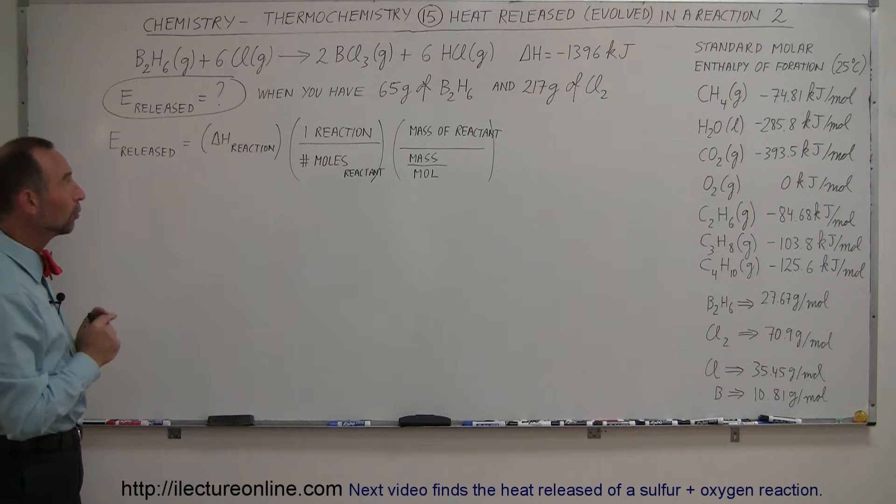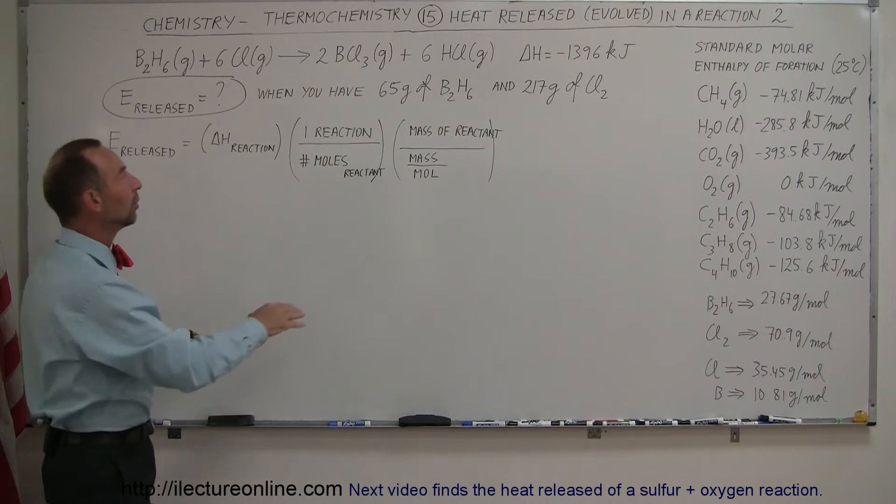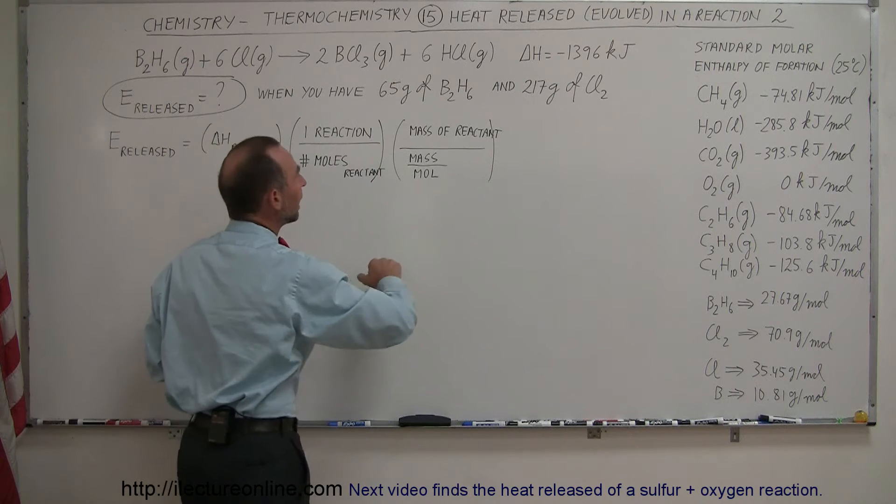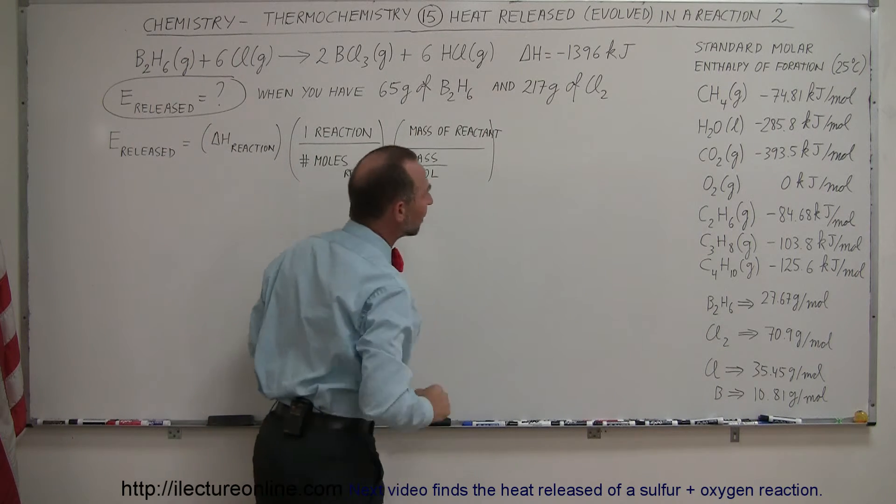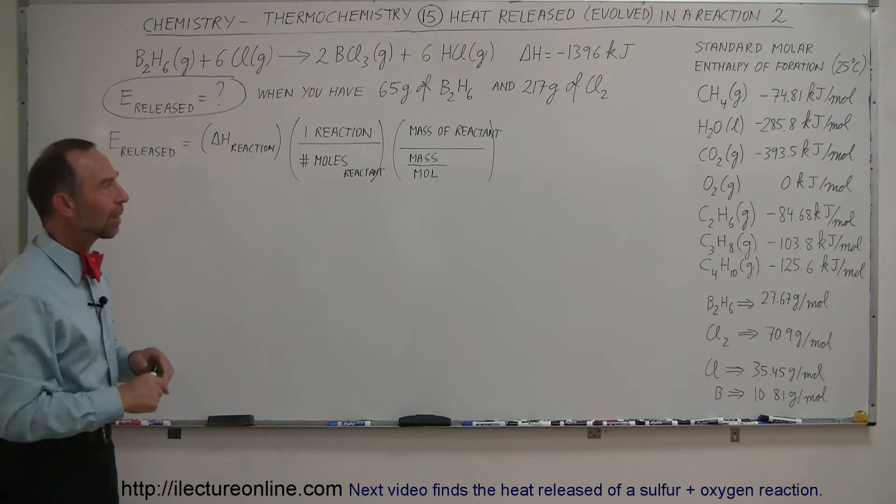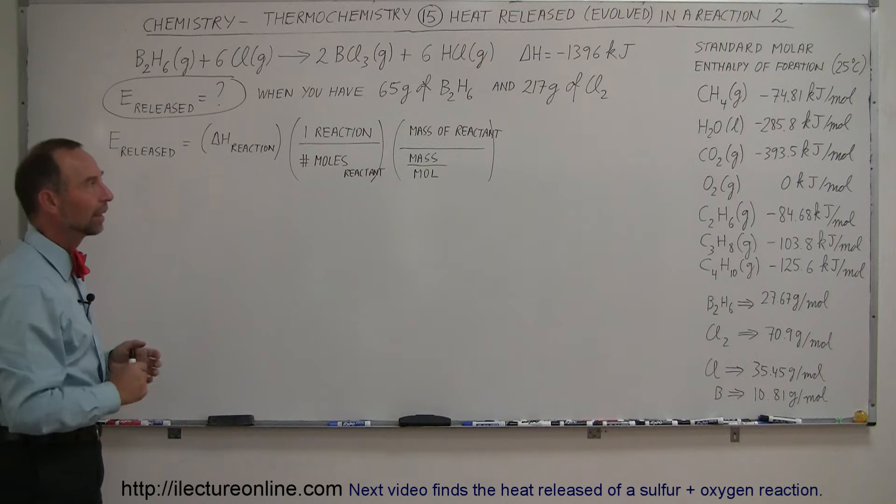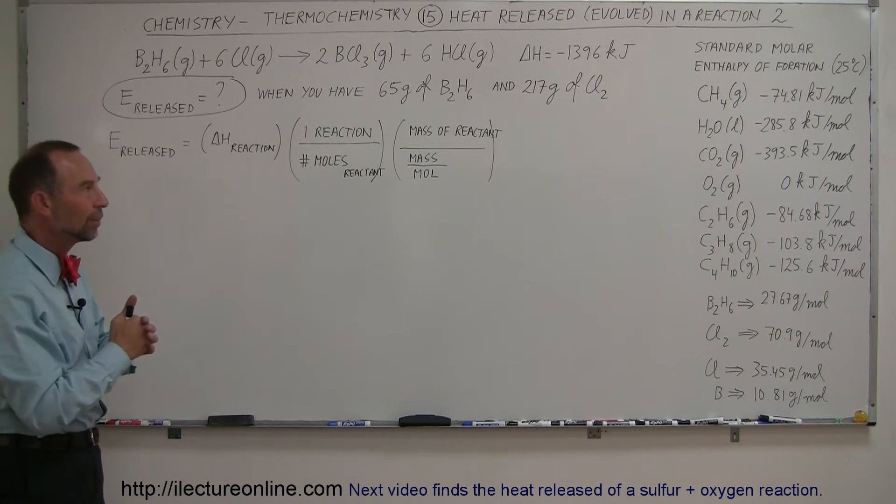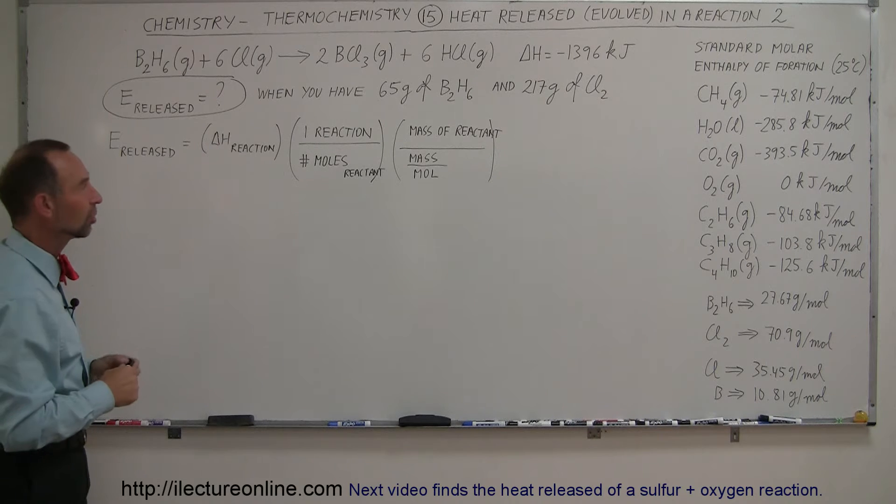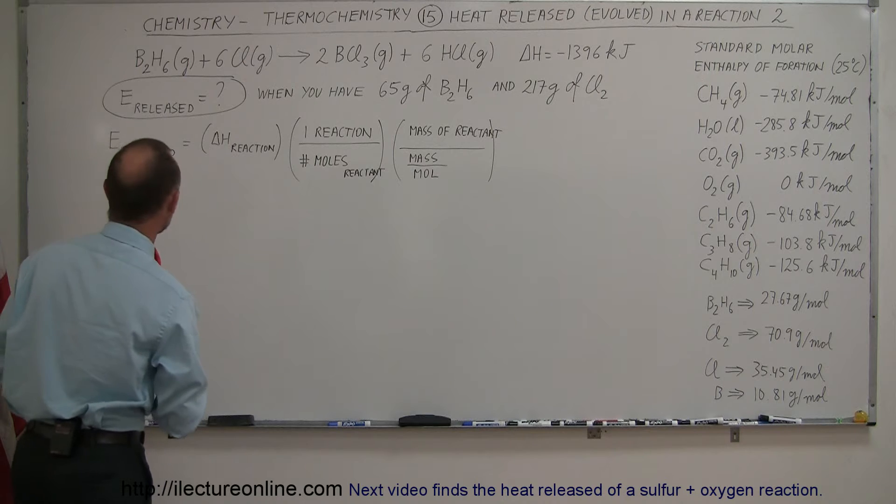What we're going to do is assume that we have an unlimited amount of the other reactant and only 65 grams of diborane. Then we're going to have an unlimited amount of diborane and limited chlorine of 217 grams. We're going to calculate the amount of energy released both times. Whichever gives us the least amount of energy will give us the limiting reactant, or limiting reagent as we should call it. Let's go ahead and do that using the same equation again.